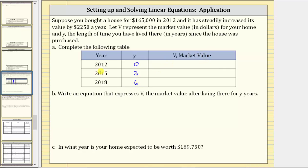And now let's find the market value for each year. Again, 2012 is the year you purchased the home for $165,000, which means the initial value of the home is the market value in the year 2012. And again we know the units are dollars.